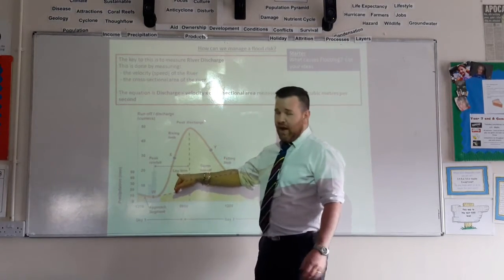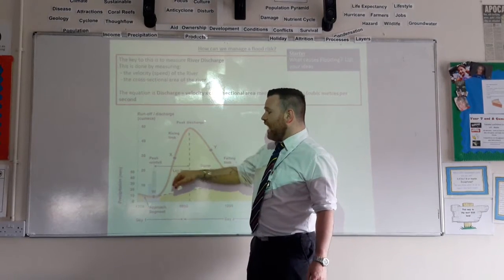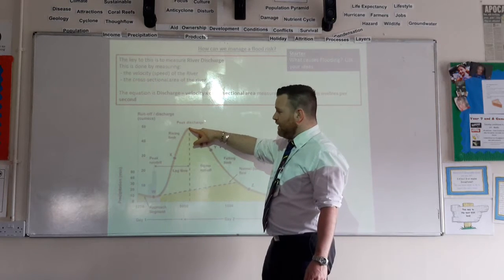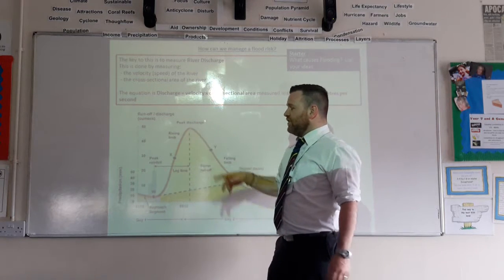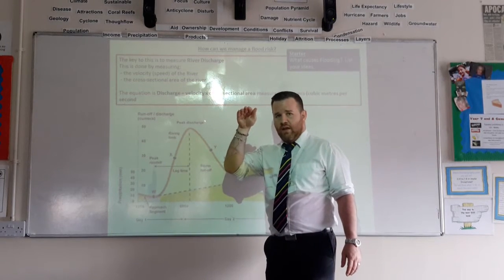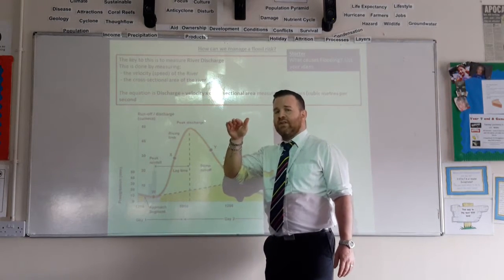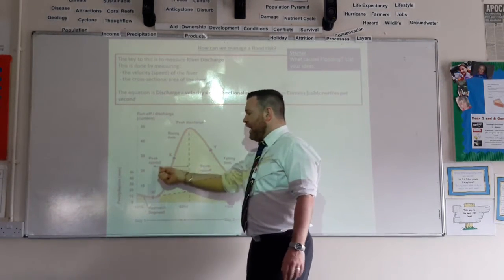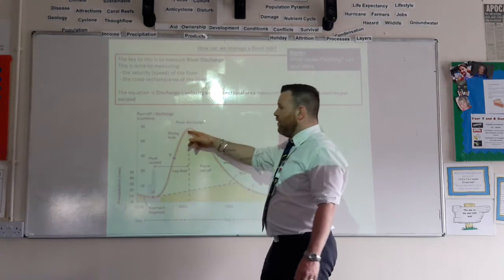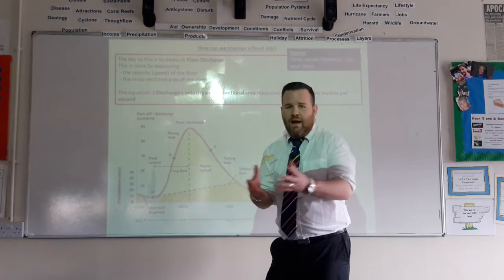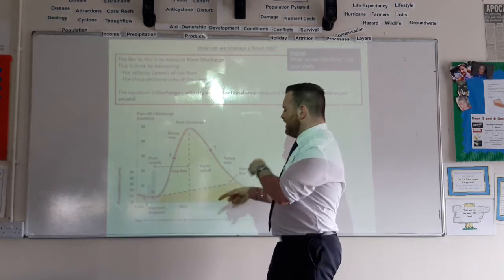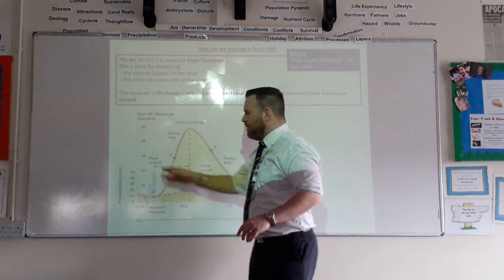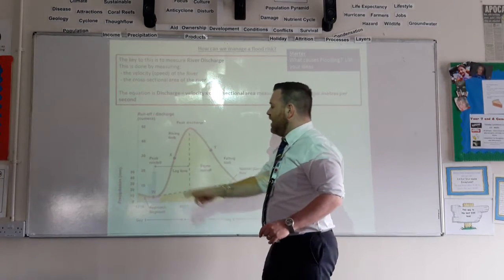You've then got something called lag time, and that is the time difference between peak rainfall and what is called peak discharge. Peak discharge is the highest amount of water that can be in the river at one place at one time — the most amount of water it can hold. The lag time is the difference between peak rainfall falling and the river reaching its capacity, the maximum amount of water that it can hold.